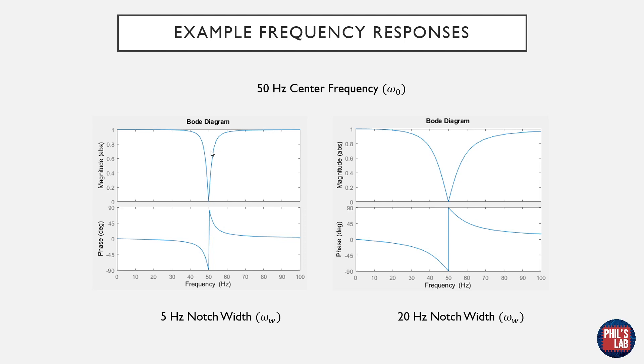So for a given center frequency of 50 hertz we have two different notch widths shown here. On the left hand side we have a 5 hertz notch and you can see it's a very narrow band that is actually attenuated but with the wider notch width we increase this band and let more frequencies through around that center frequency.